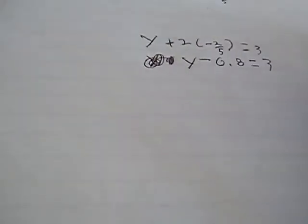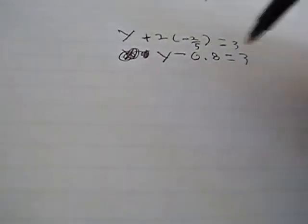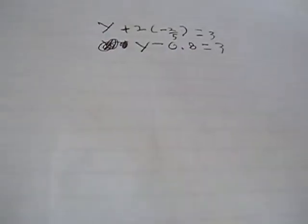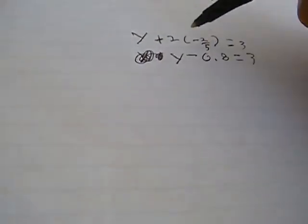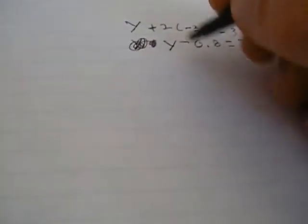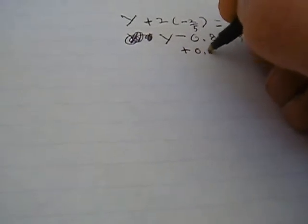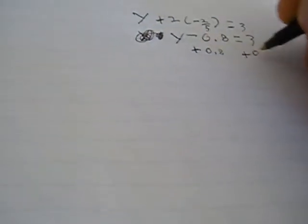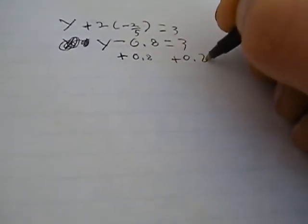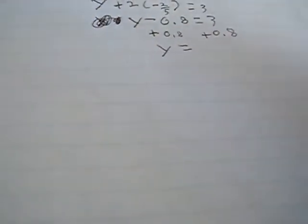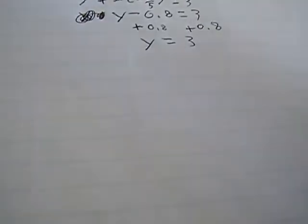Now we can add 0.8 to both sides to get y alone and find the value of it. Y now is equal to 3.8.